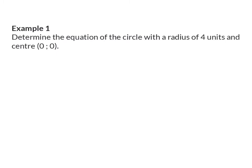Example 1: Determine the equation of the circle with a radius of 4 units and center (0, 0). The first thing we need to realize is that the center of the circle is at (0, 0), or at the origin, and therefore this equation will be in the standard form x squared plus y squared equals r squared.